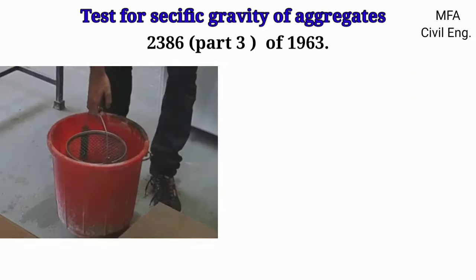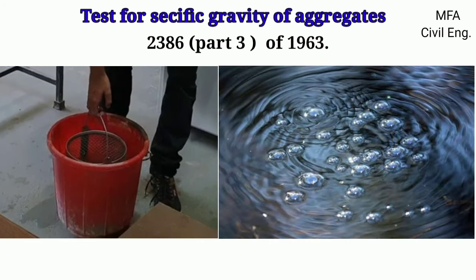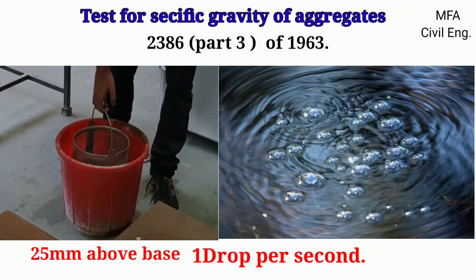Immediately after immersion, the entrapped air is removed from the sample by lifting the basket containing the aggregate 25 mm above the base of the tank and allowing it to drop 25 times at the rate of about one drop per second. During the operation, care is taken that the basket and aggregate remain completely immersed in water.